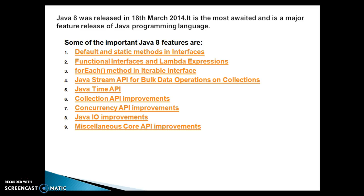Some of the important Java 8 features are: first, default and static methods in interfaces; second, functional interface and lambda expression; third, how the for-each loop works in Java 8; fourth, Java Stream API, which shows how we can work on bulk data operational collections. Fifth, there were drastic changes in the Java Time API. Sixth, Collection API improvements. Seventh, Concurrency API improvements. Eighth, Java IO improvements. And finally, miscellaneous core API improvements. These are the things we are going to cover in this series of video tutorials.